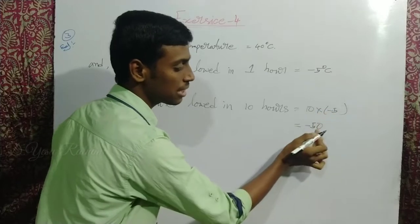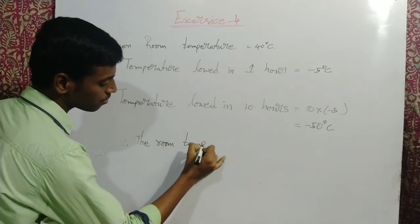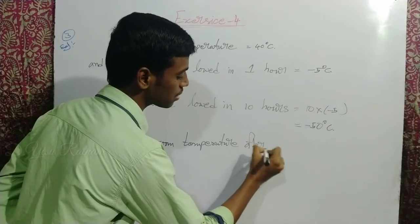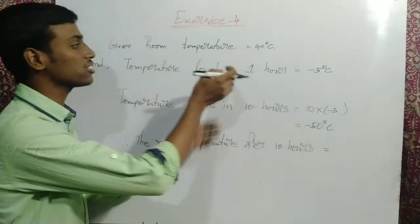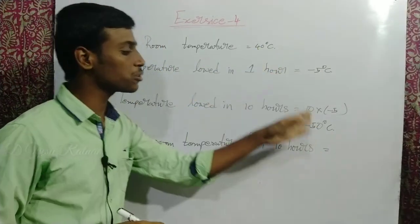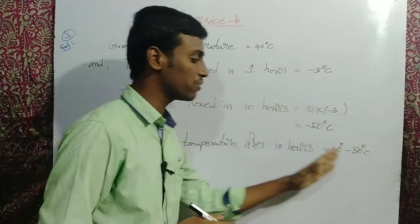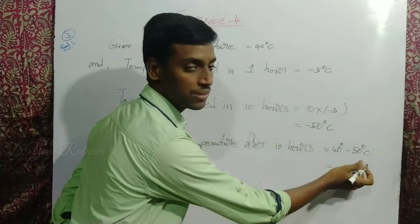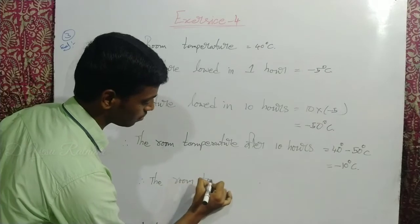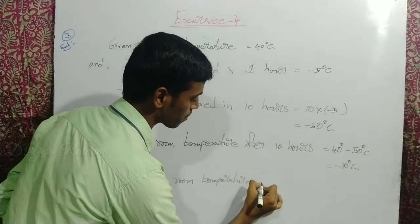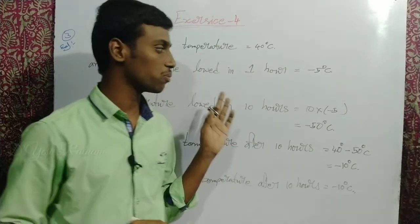So 10 into minus 5 is minus 50 degrees. Therefore, the room temperature after 10 hours: 40 degrees minus 50 degrees equals minus 10 degrees Celsius. Therefore, the room temperature after 10 hours is equal to minus 10 degrees Celsius. Thank you for watching.